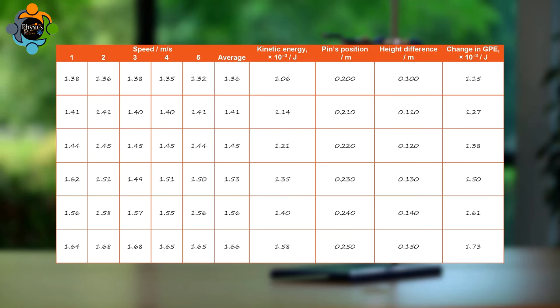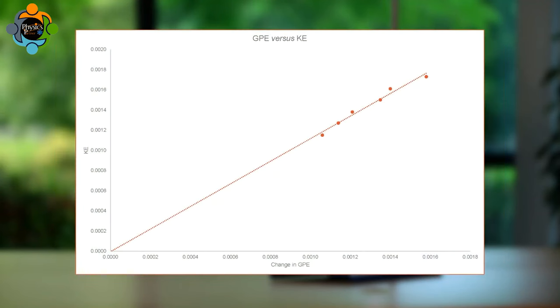A graph of change in gravitational potential energy versus kinetic energy is then plotted once all data points have been recorded or calculated. The change in gravitational potential energy is almost equal to the gain in kinetic energy.